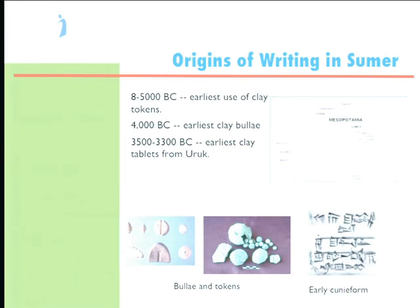At a certain point, people realized: if I have to break the ball every time to find out what's inside, isn't there a way to know without breaking it? You could take the token, impress it into the surface of the clay ball — the bulla — and make marks. If you make eight little sheep marks with a sheep token, that would show there are eight tokens inside. Then another realization: why do we even need the tokens inside? We've got the marks on the outside, and that's hardened — that's our record. So with those marks produced by the impression of tokens, writing evolved.